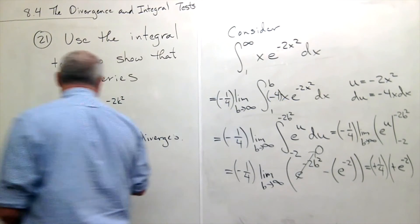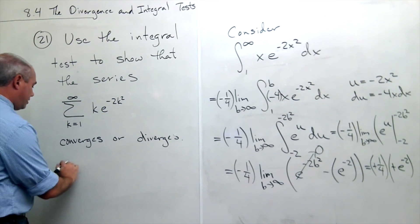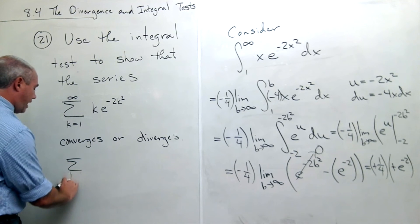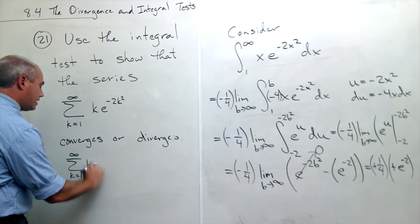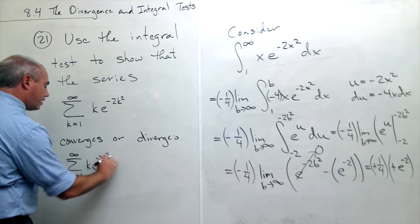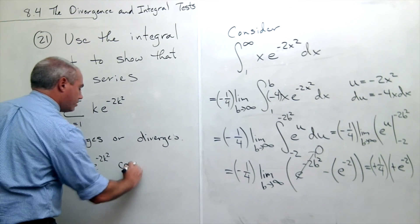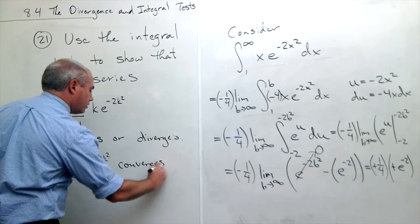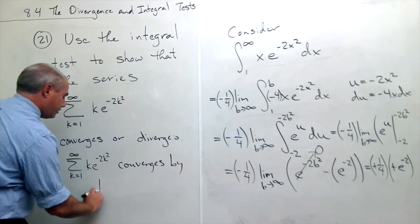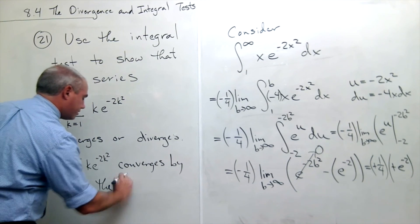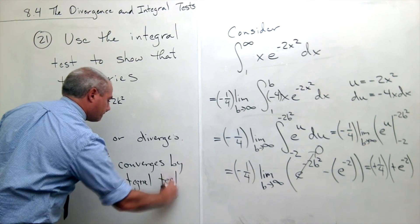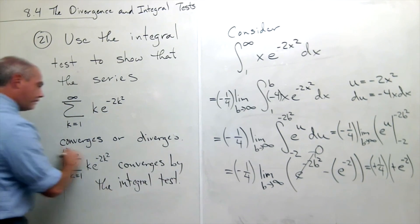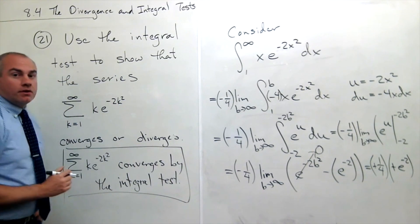So the answer to my question is the sum k going from 1 to infinity of k e to the negative 2k squared converges by the integral test. And we are done.